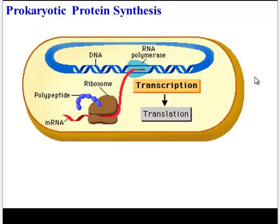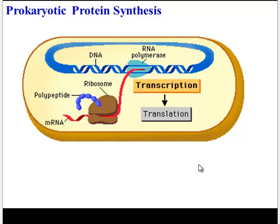Another unique thing about prokaryotic protein synthesis is that transcription is immediately followed by translation. This is because there's no nucleus to separate the DNA from the ribosome. So the DNA is transcribed by RNA polymerase into RNA, which is directly translated by the ribosome into a polypeptide.